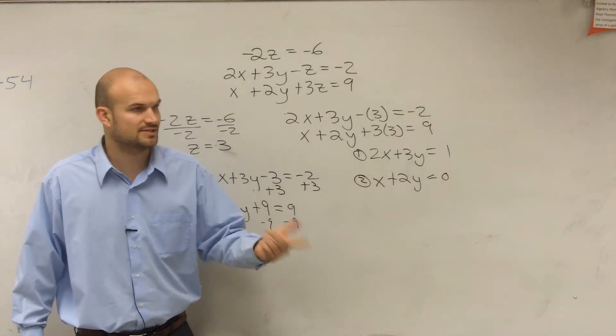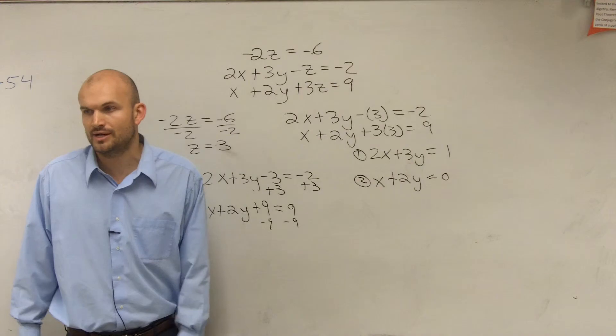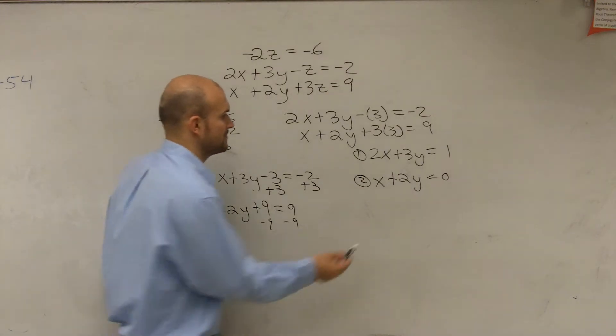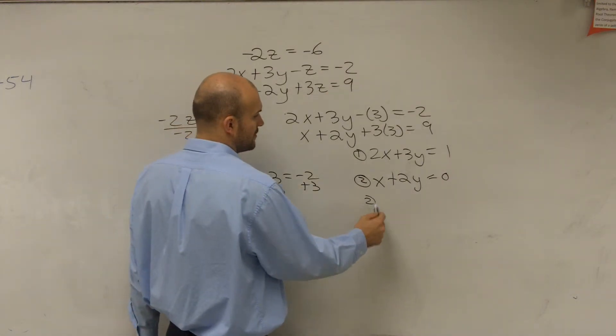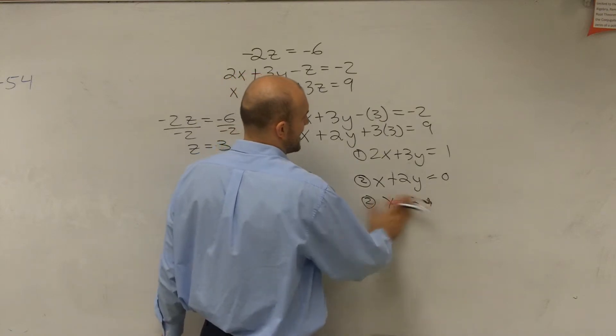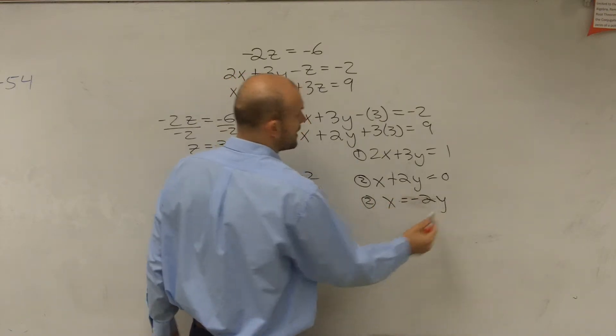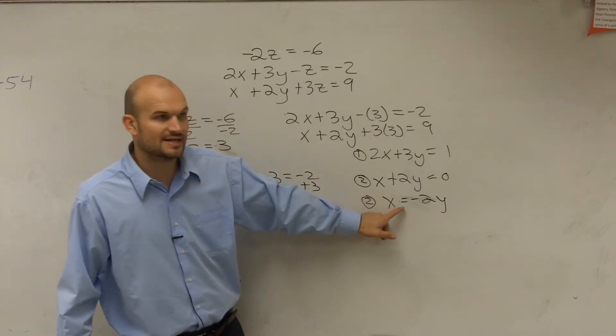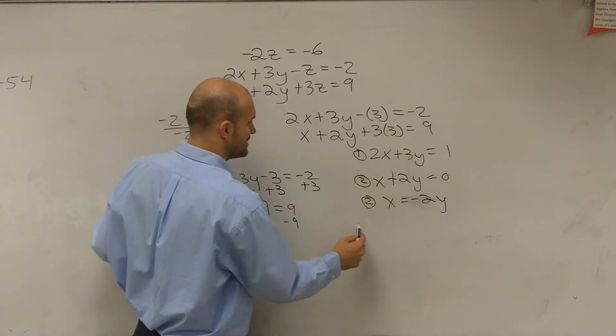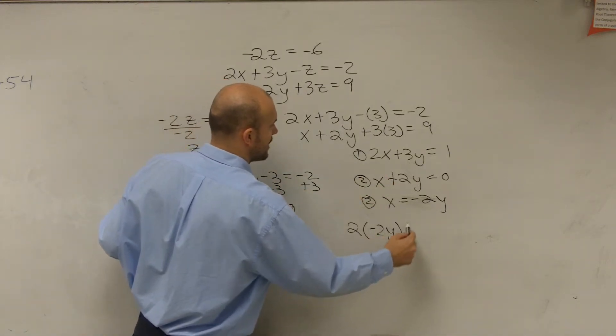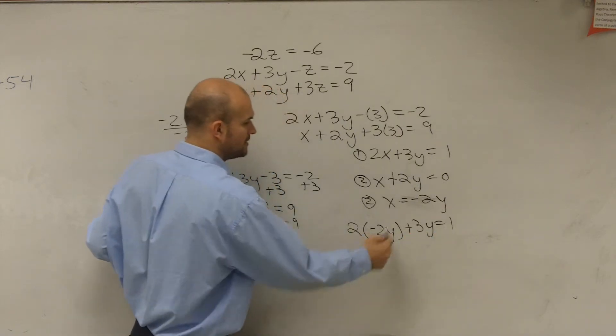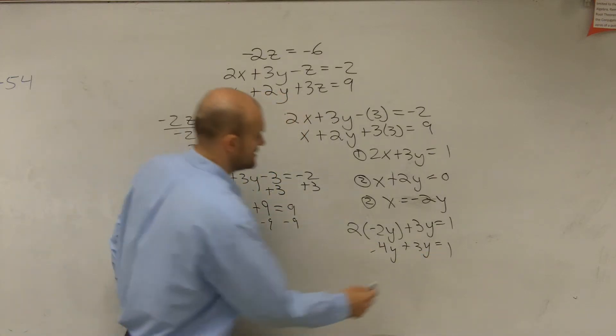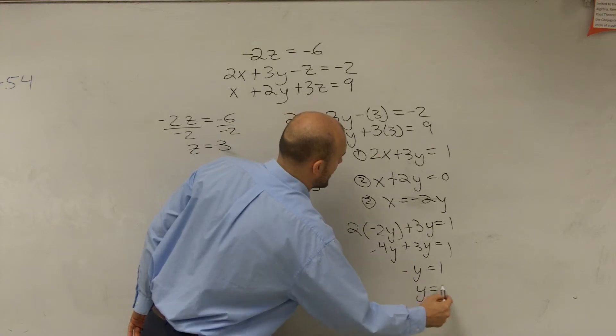So now I can use what? Elimination, substitution, whatever. So what would be the easiest way to do for right here? To plug in? Yeah, I could use that way. So I could solve this. I could rewrite number two as x equals negative 2y. So I could rewrite two as x equals negative 2y. Then I could plug that in. So I could do 2 times negative 2y plus 3y equals 1. Negative 4y plus 3y equals 1. That gives me negative y equals 1. y equals negative 1.